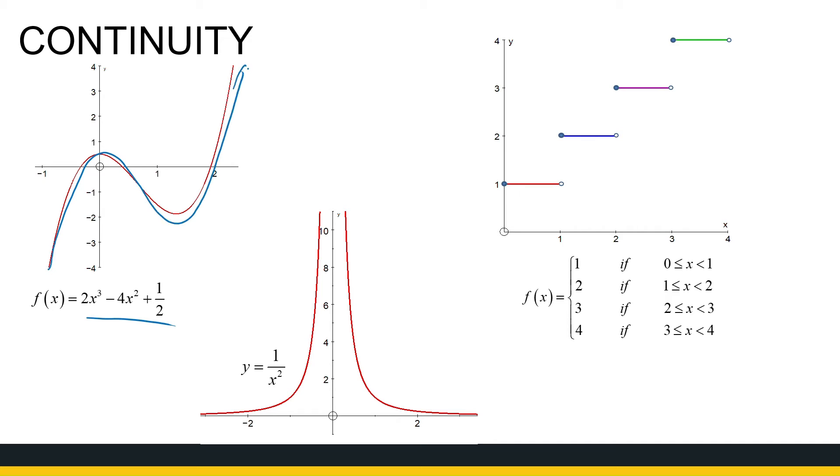One over x squared is continuous on this part and it's continuous over there, but at x equal to zero it's not continuous. So it's continuous where it's defined. For those x values it's continuous, for those x values it's continuous.